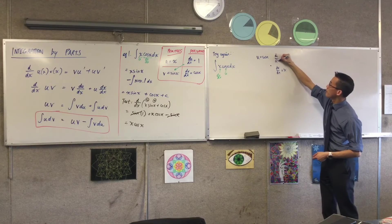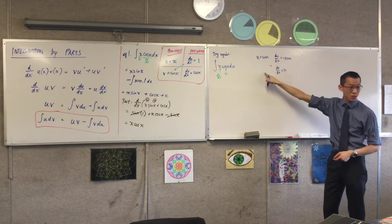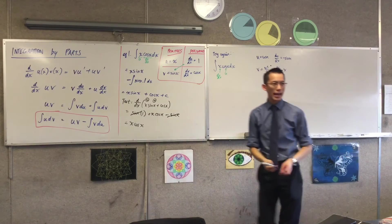What's the derivative over here? Minus sin. And what's my integral? x squared on two.